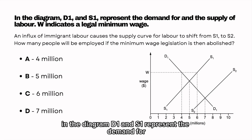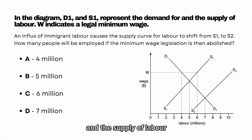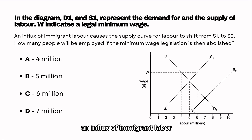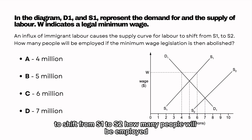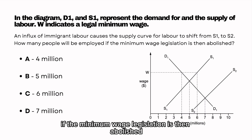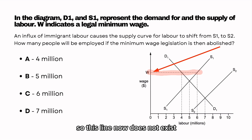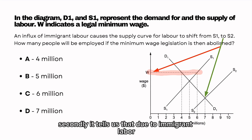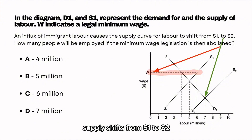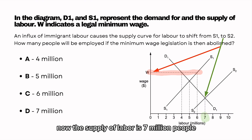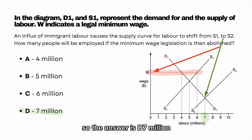D1 and S1 represent the demand for and the supply of labour. W indicates a legal minimum wage. An influx of immigrant labour causes the supply curve to shift from S1 to S2. How many people will be employed if the minimum wage legislation is then abolished? First, let's abolish the minimum wage altogether. Second, due to immigrant labour, supply shifts from S1 to S2. Finding our new equilibrium, the supply of labour is 7 million people. So the answer is D — 7 million.